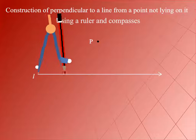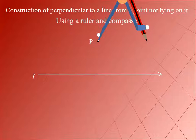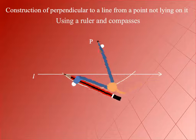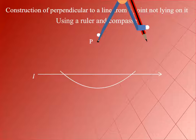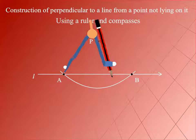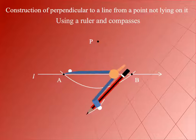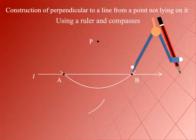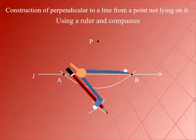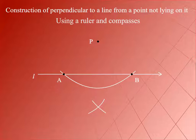With P as centre and with any radius, draw an arc cutting the line L at A and B as shown here. With A and B as centres and with radius greater than half AB, draw two arcs on the other side of the line L intersecting each other at Q, as shown here.